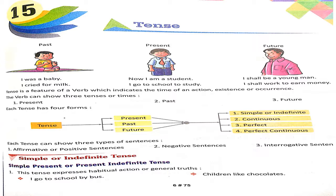For simple present tense, the golden rule is: Subject + Verb first form + S or ES + Object. We add S or ES to the verb's first form. Whether S or ES is added depends on who the subject is. I understood — all of you now. The use of S or ES with the verb's first form in the present tense is dependent on the subject.